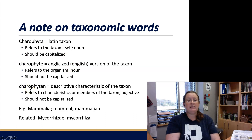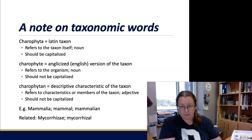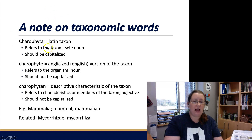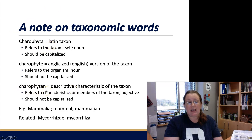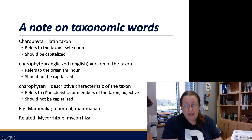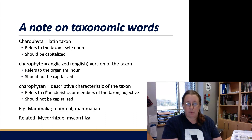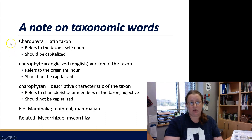Last is, for example, 'charophytan.' This is an adjective that is a form of the Latin taxon. Charophytan describes a characteristic of charophytes — for example, a charophytan leaf, charophytan molecules, or charophytan molecular structure characteristics. Again, this is generally used in a more casual way than the Latin taxon itself.